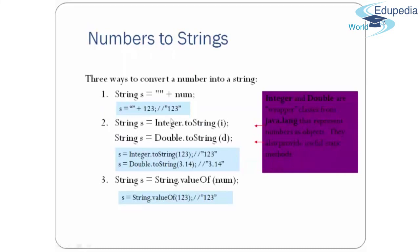To convert numbers to strings, you can use simple string concatenation by concatenating an empty string literal to an integer. You can also use Integer.toString() or Double.toString() to get a string literal. Another option is String.valueOf(integer), which also returns a string. Integer and Double are wrapper classes present in java.lang that represent numbers as objects and provide methods like toString() for conversion.